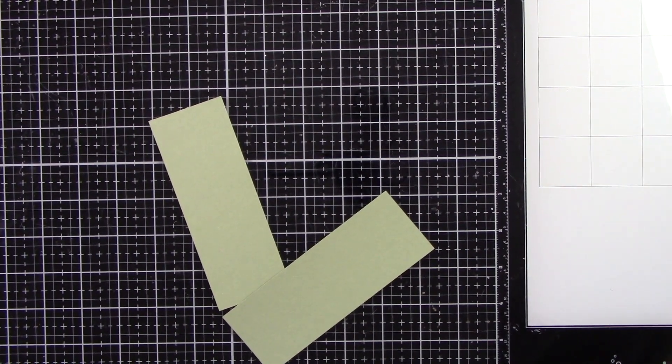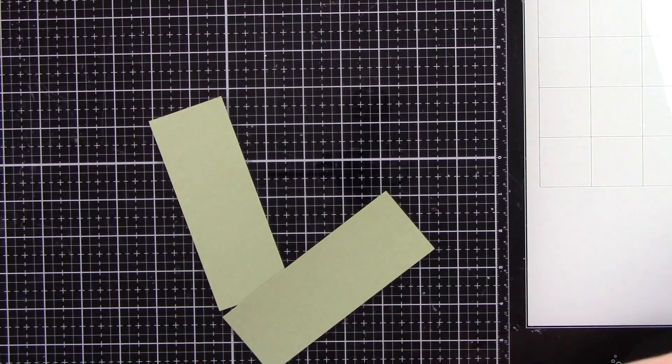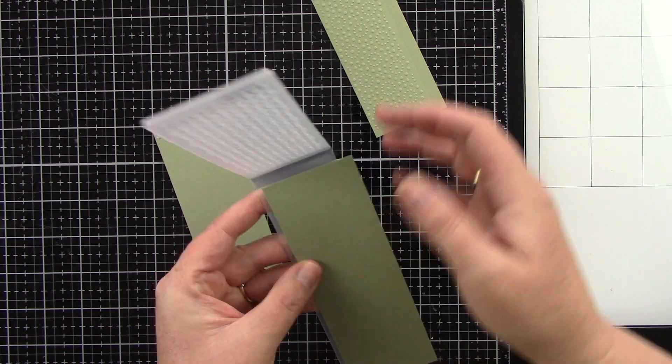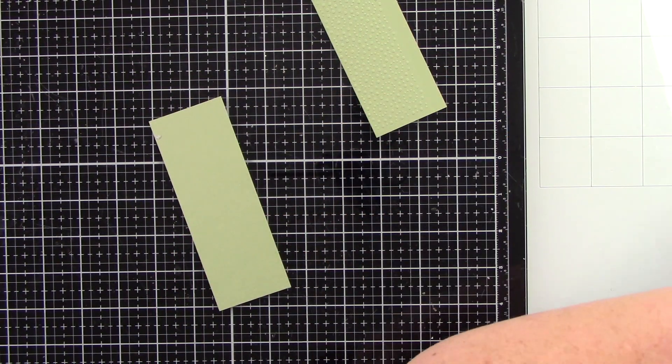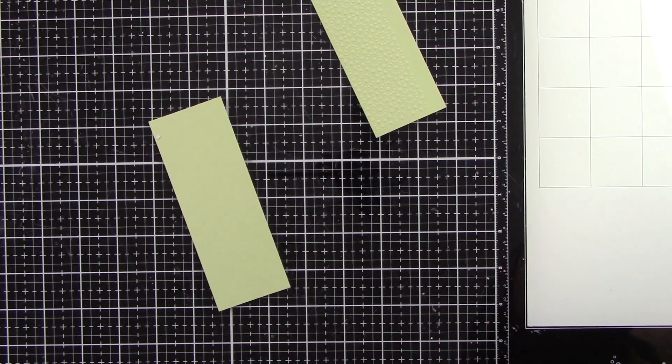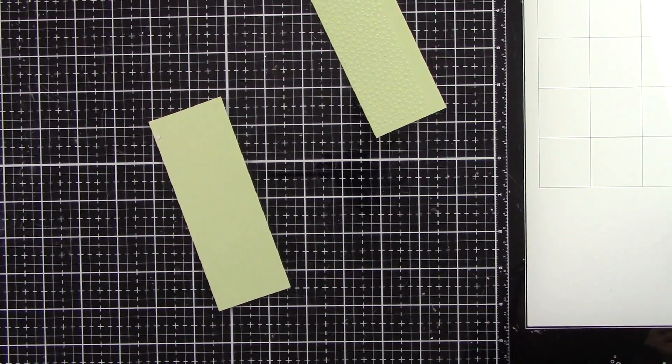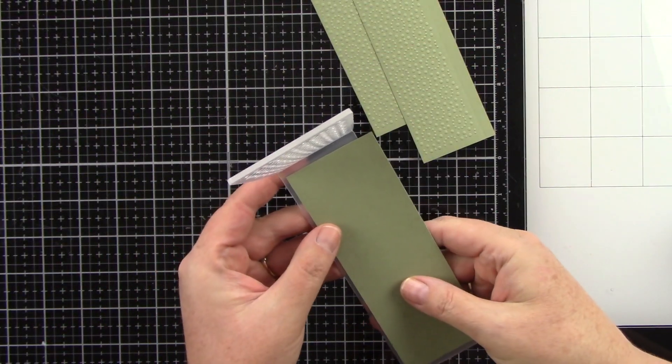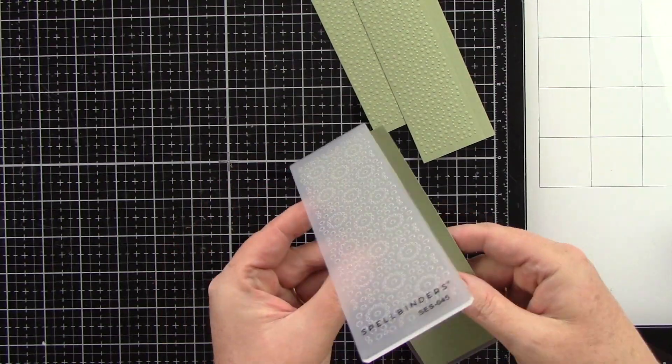So right now I am just placing them in that little embossing folder and putting it through my Platinum 6 die cut machine from Spellbinders. I also have the universal plates which I do have to say I really love especially for embossing folders since there's 3D embossing folders, regular embossing folders.